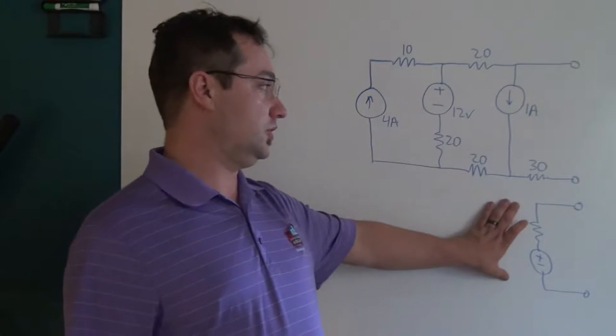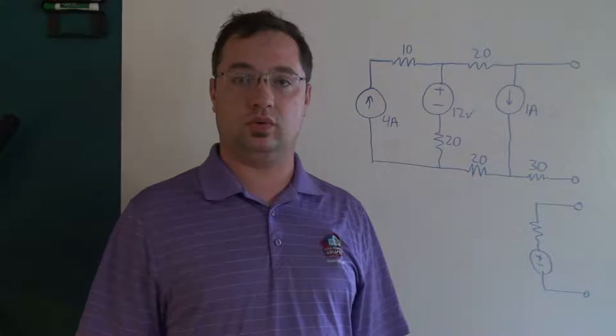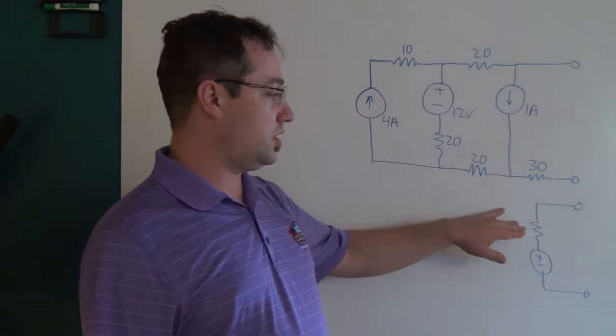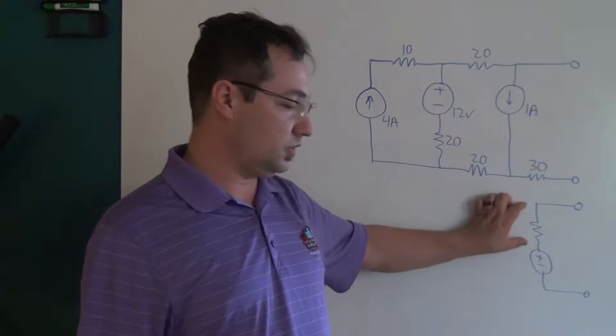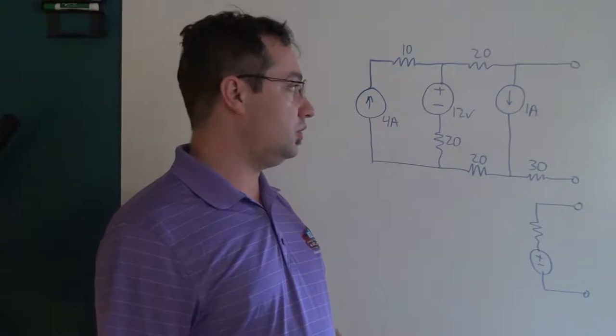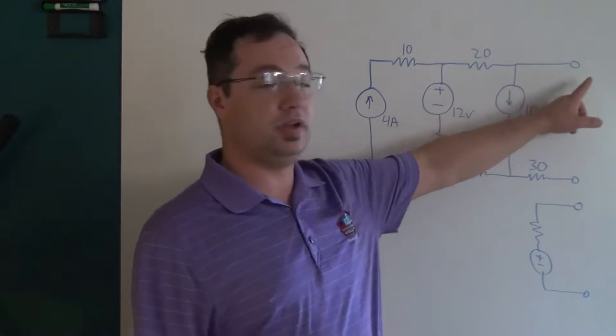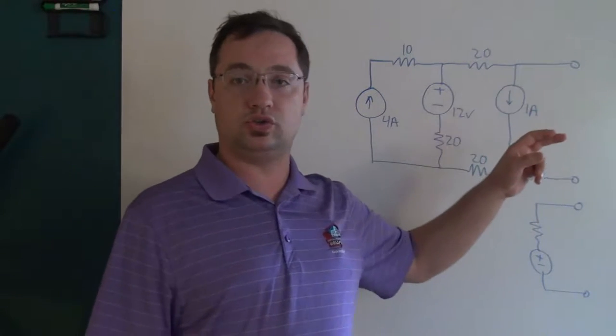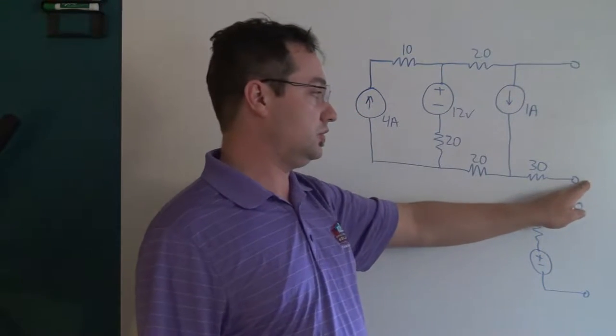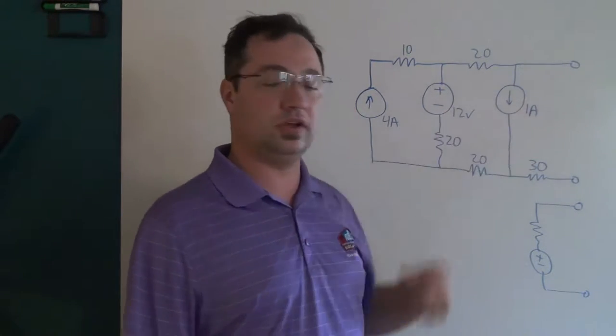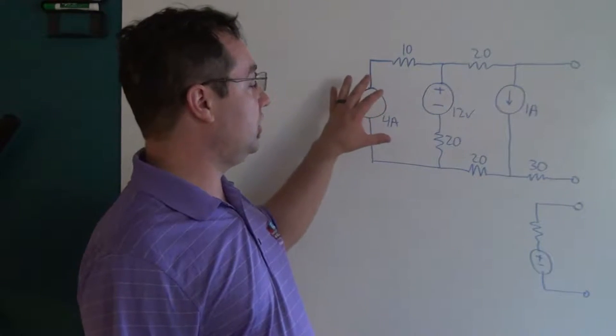To create this representation of the two-port network, we need to figure out two out of three things. We need to figure out what the Thevenin resistance is — commonly referred to as the Thevenin resistance. We need to figure out what the open circuit voltage is at the two ports, meaning the voltage across these two ports when nothing else is connected. And we need to figure out what the short circuit current is — if we install a jumper across the terminals, what is the current that goes through that jumper. If we know two out of those three things, we can come up with the Thevenin equivalent model.